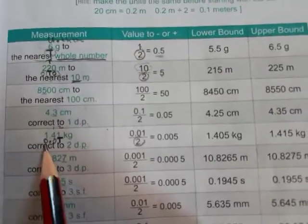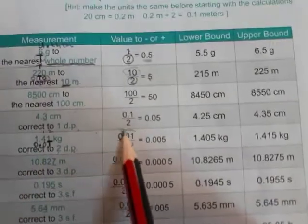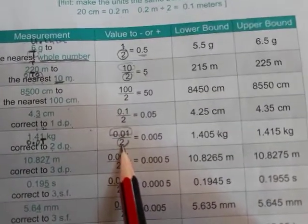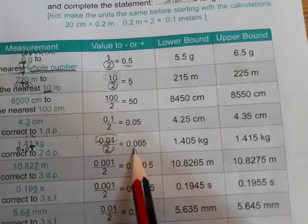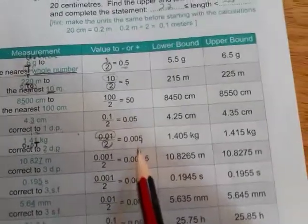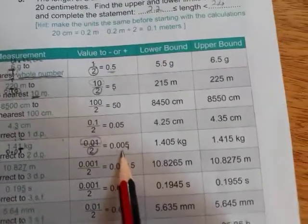Here, you've got 0.01. There is your 0.01. Divide that by 2, which gives you 0.005. So this is really the limit.